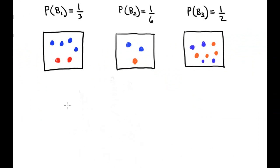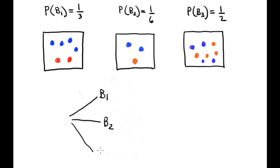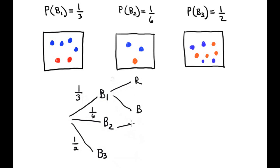Before solving the problem, we draw the tree diagram. We have 3 different balls: B1, B2, and B3. The probability of selection is 1 over 3, 1 over 6, and 1 half respectively. Inside each ball, we have selection of red and blue.